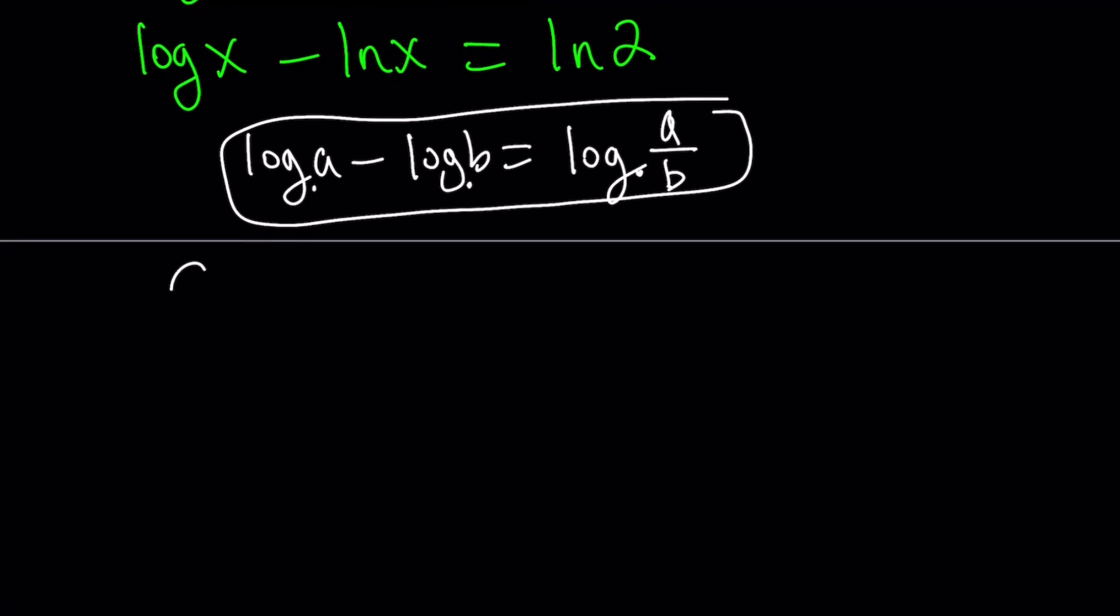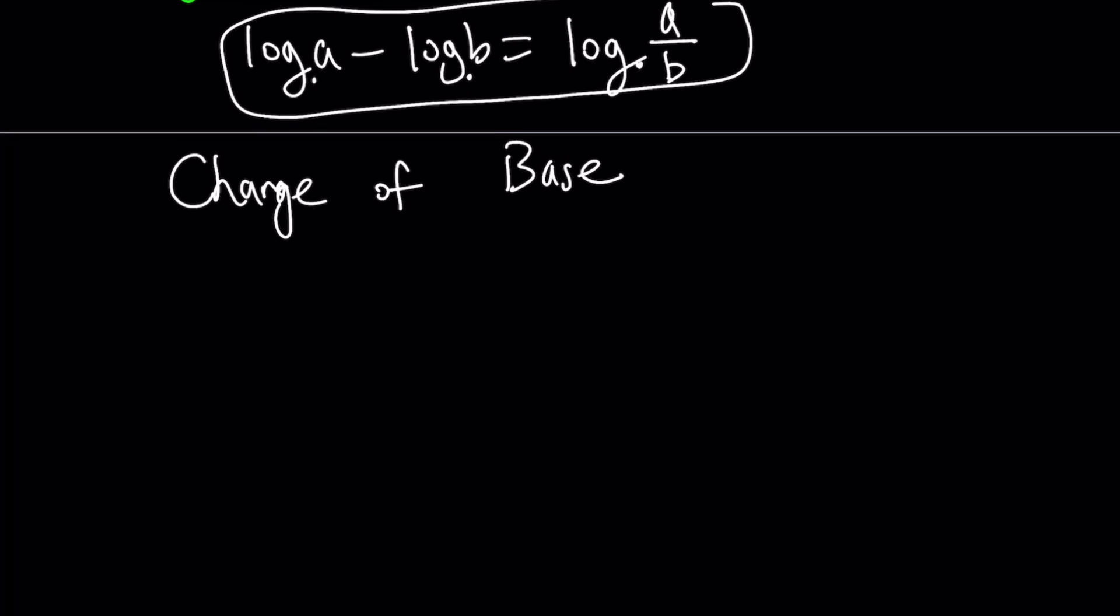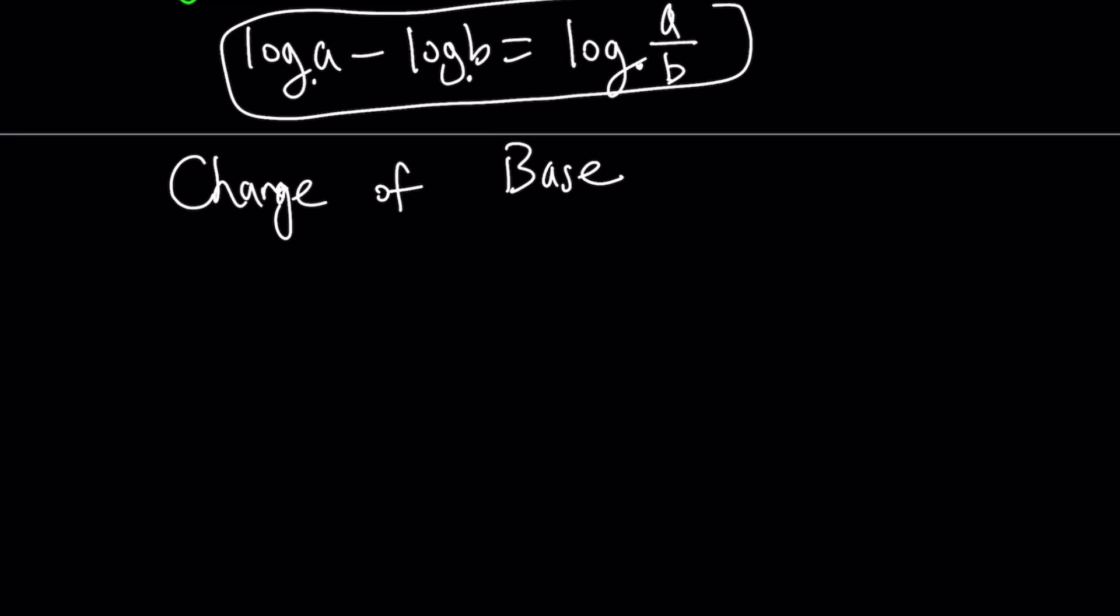And change of base comes to the rescue. Change of base is a very important formula. And it can be proven by using definition of logs because any property can be proven using definition. So how does that work?